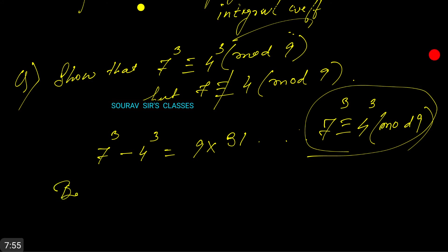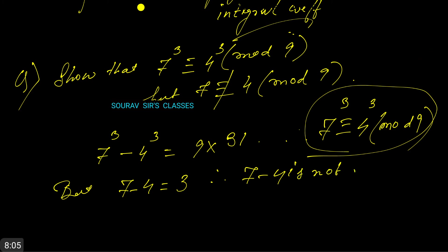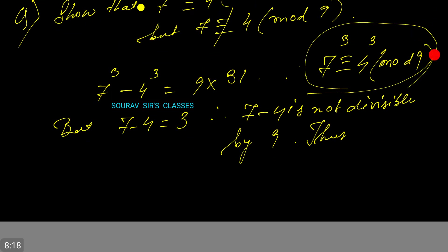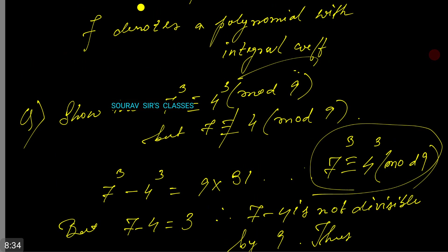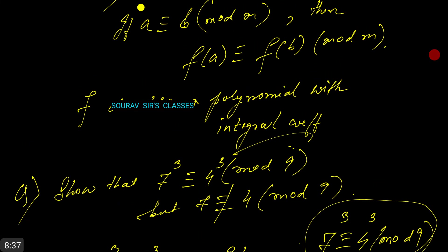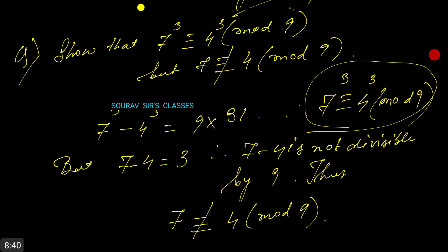But 7 − 4 = 3, therefore 7 − 4 is not divisible by 9, thus 7 ≢ 4 (mod 9). In this way we will solve these sums based on congruences. Thanks for watching.